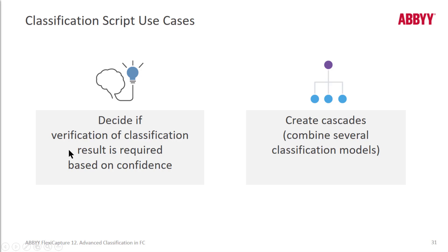Using scripting, you can classify documents by different models, and a model is equivalent to a training batch — a classification training batch. You can assign classes to a page using the page.result class name method. You can also specify via script whether or not verification is required. These scripts are executed at the recognition step for each page.